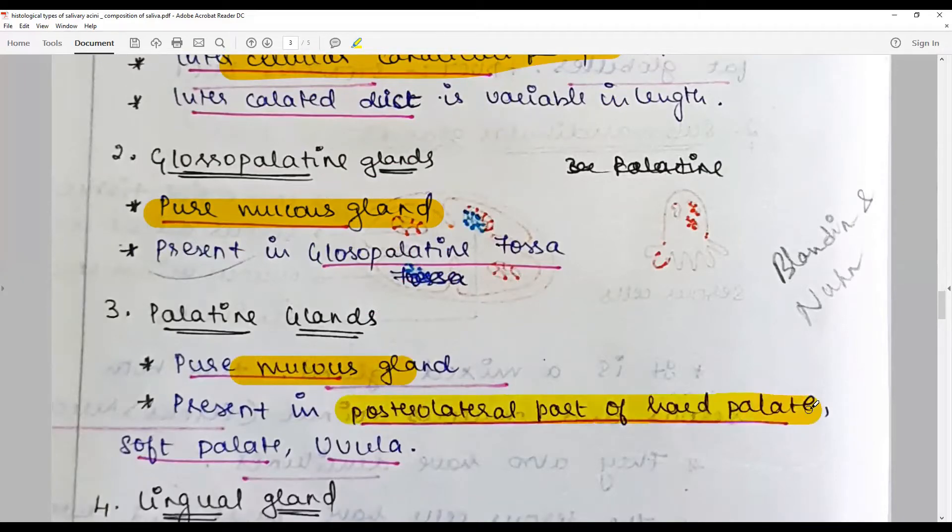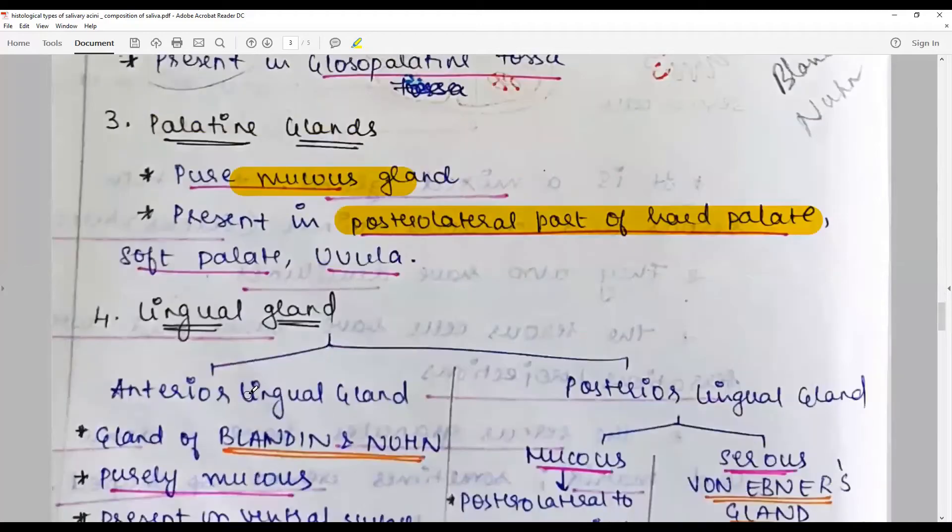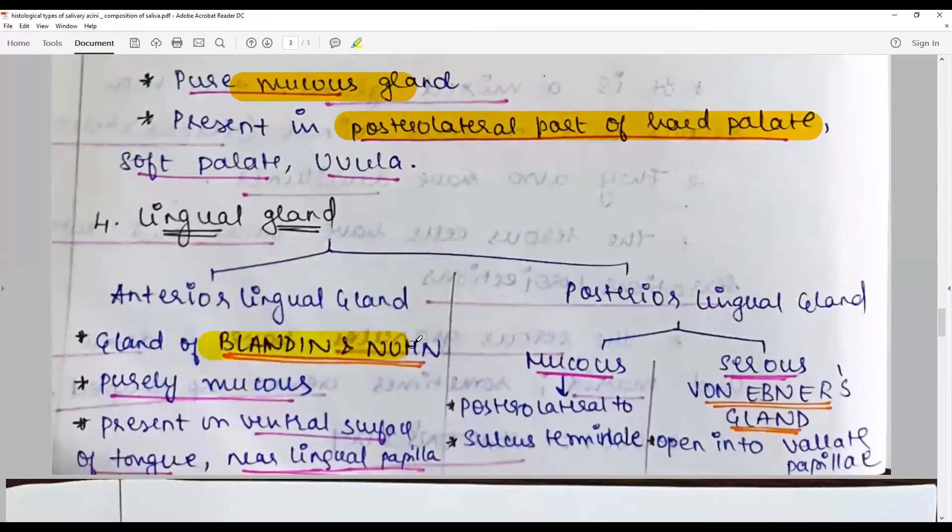Palatine glands are mucous glands supplementing glossopalatine areas and found in the posterior part of the hard palate, soft palate, and uvula. Lingual gland - the anterior lingual gland is called the gland of Blandin and Nuhn, purely mucous, present on the ventral surface of tongue.